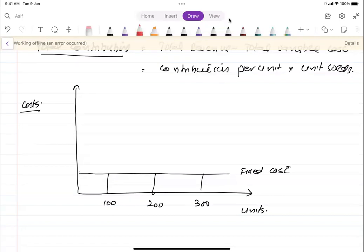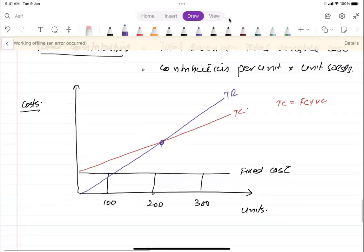The line that starts from the fixed cost is called total cost, because total cost is the sum of fixed cost plus variable cost. The line that starts from zero and crosses the total cost is called the total revenue line, the blue line.